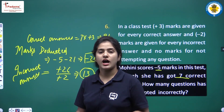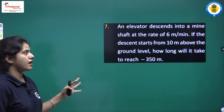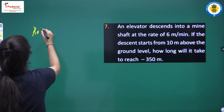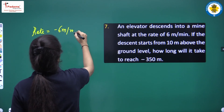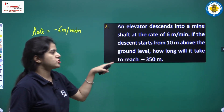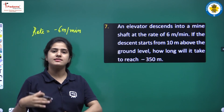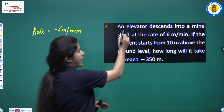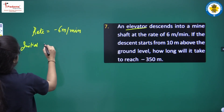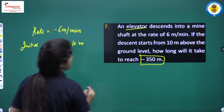Question 7: An elevator descends into a mine shaft at the rate of 6 meters per minute, so its rate is minus 6 meters per minute. The descent starts from 10 meters above ground level, which is plus 10 meters, and it needs to reach minus 350 meters. We need to find how long this will take.